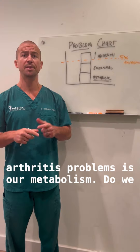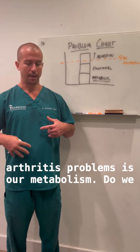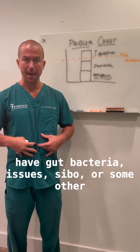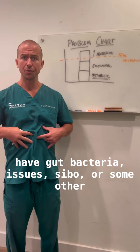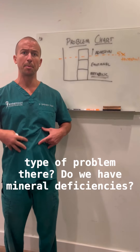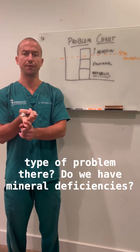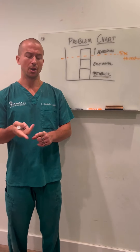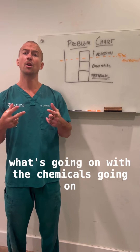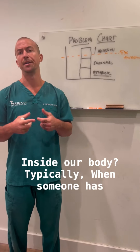The number one biggest piece with lupus or other inflammatory arthritis problems is our metabolism. Do we have gut bacteria issues, SIBO, or some other type of problem? Do we have mineral deficiencies or other vitamins we're lacking? What's going on with the chemistry inside our body?